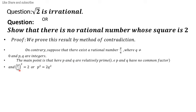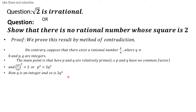So (p/q)² = 2, which implies p² = 2q². We have assumed p and q are integers, so q is an integer, and 2q² is also an integer, because q² is an integer and multiplying any integer by an integer gives an integer. This kind of thing is discussed in algebra when studying group theory.